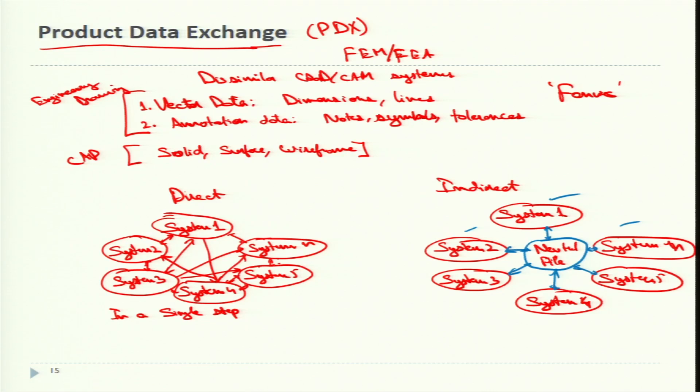Direct translators provide a satisfactory solution when a small number of systems are involved. But as the number increases, the number of translator programs required increases significantly — each system must interact with every other system. DXF is a two-dimensional format, while IGES and STEP are three-dimensional formats. The neutral file is important because it acts like a PDF format that can accept inputs from PPT, JPEG, or Word files — similarly, the neutral file can interact with different post-processors.